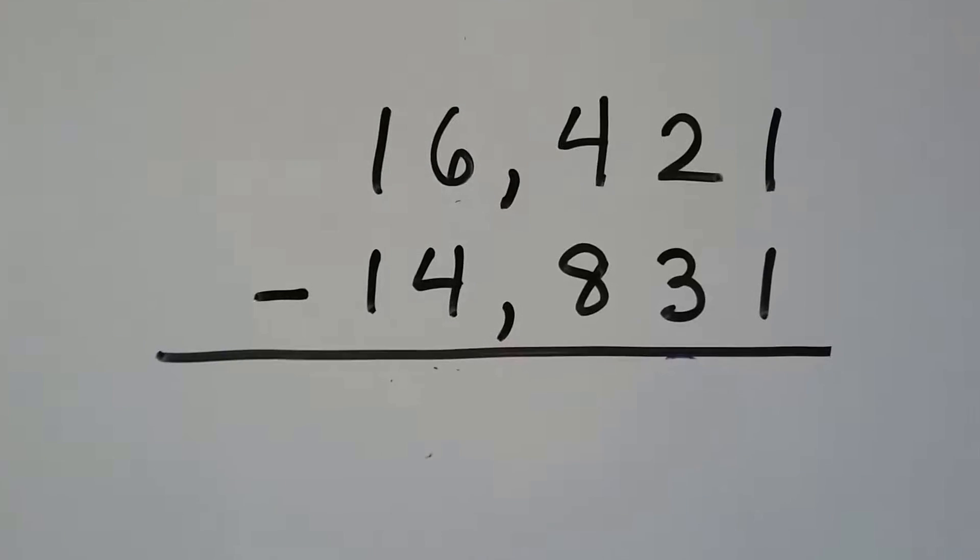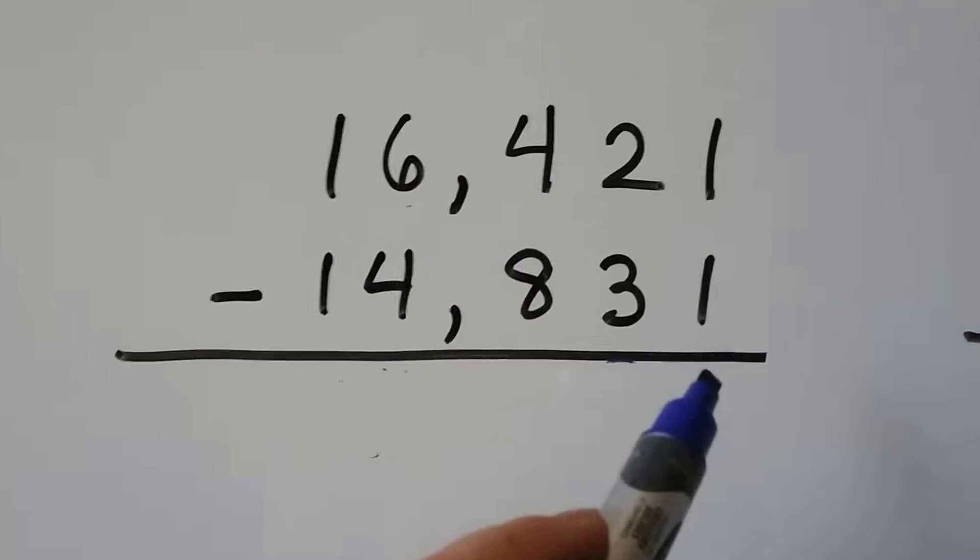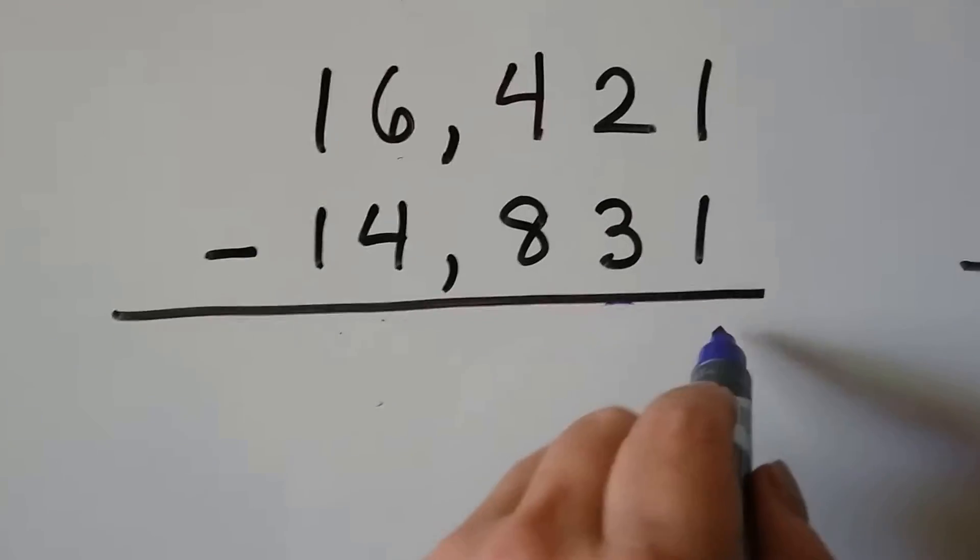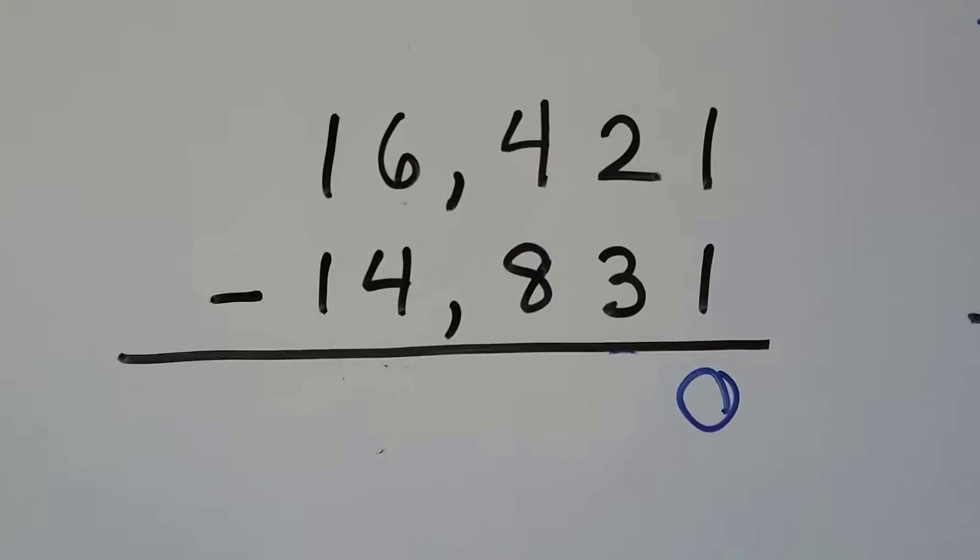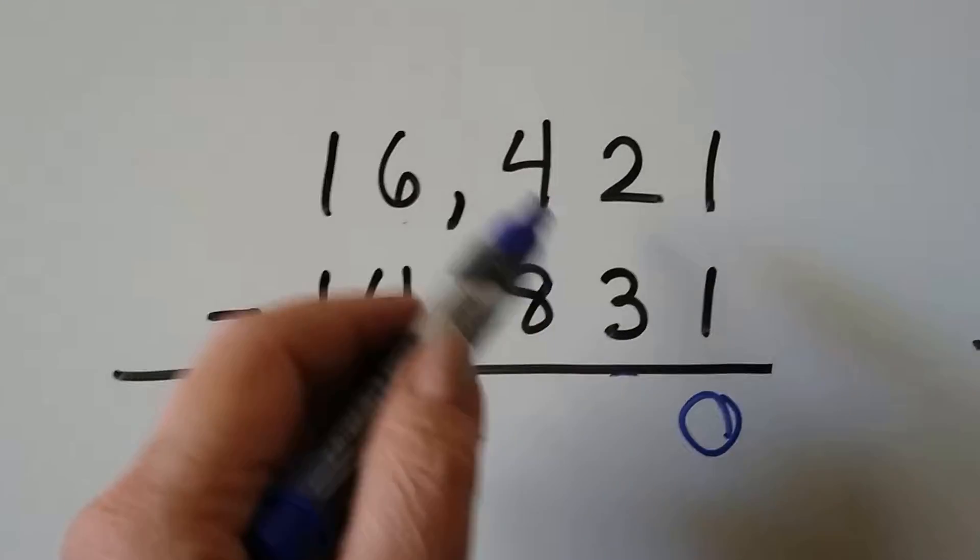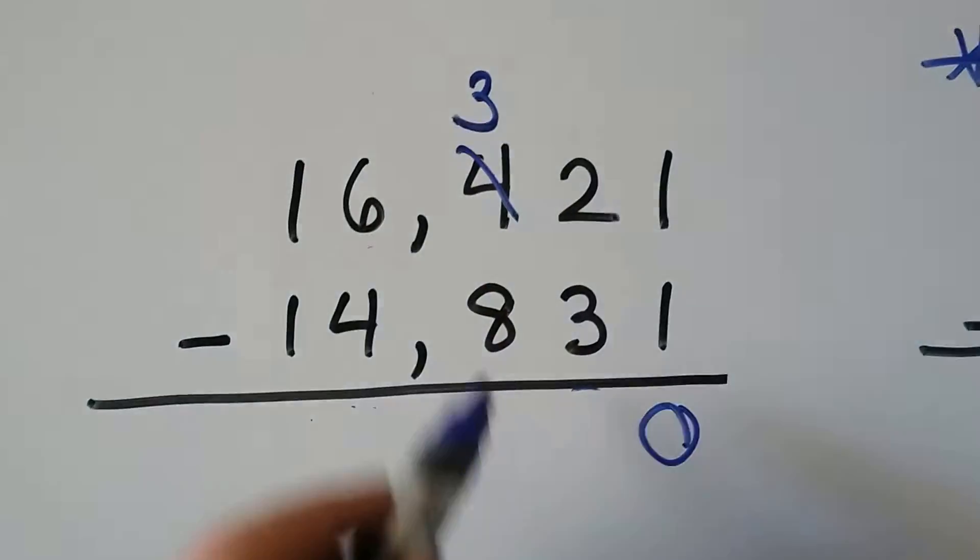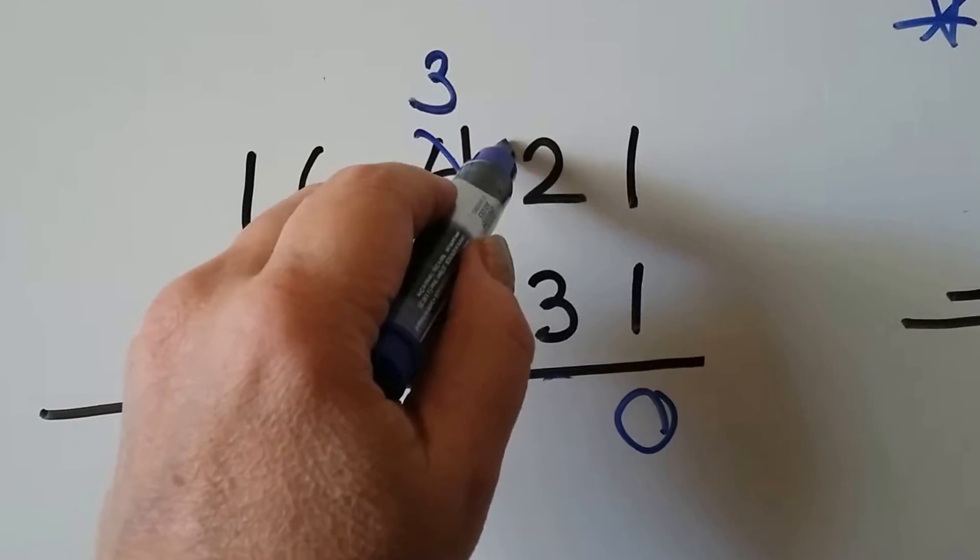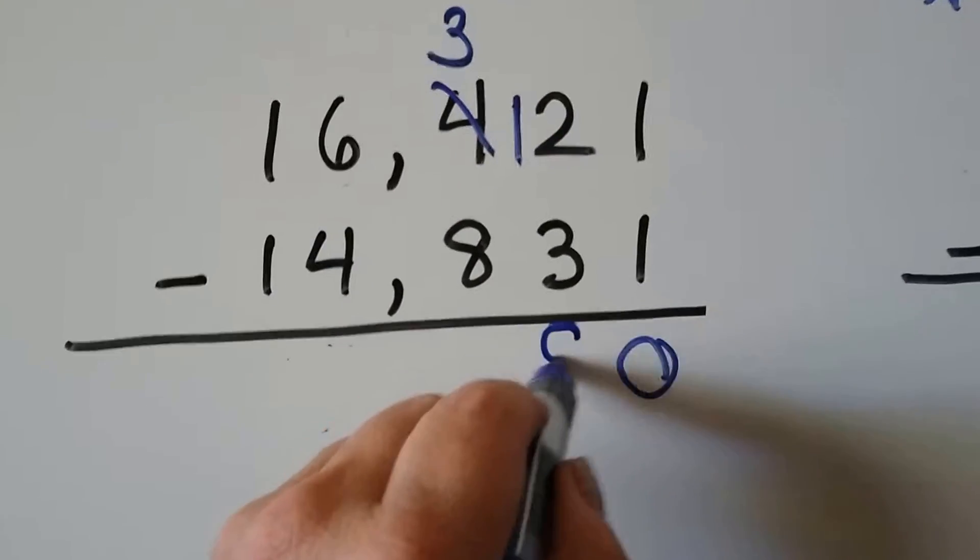Now we have a subtraction one and we're going to have to regroup. So we start with the ones place. We've got a 1 take away a 1. That's easy. That's a 0. Now we have a 2 take away a 3. And we can't do that. So he says, hey, 4, can I have 1? 4 says, sure. He becomes a 3. He gives 1 to the tens place. Now we have 12 take away 3. We can do that. That's a 9.